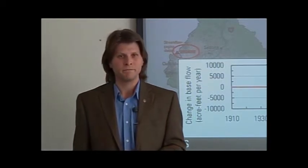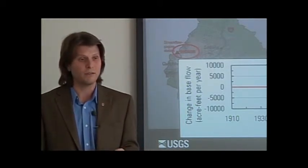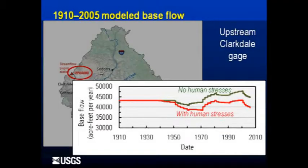We see that in 1910, there were no human stresses on the groundwater system to speak of — the change was zero. But as we move forward through time, starting around 1940 or so, base flow begins to decrease. And by the year 2005, we can measure the difference between zero and the final resting place of that line and see that it is a decrease of about 4,900 acre-feet per year of base flow at the Clarkdale gauge, at the upstream end of the Verde Valley. This is attributable solely to human stresses — namely, groundwater pumping. We have subtracted out all other things that can change base flow, leaving only this.